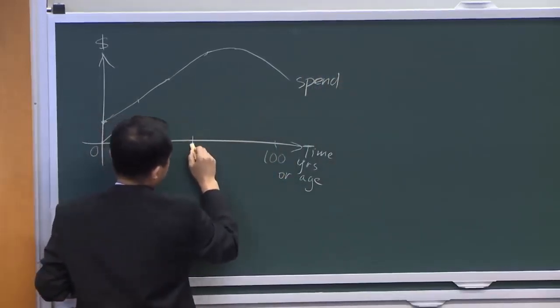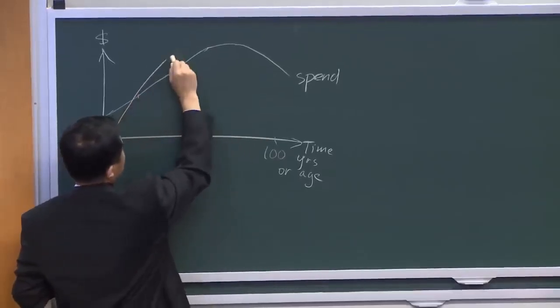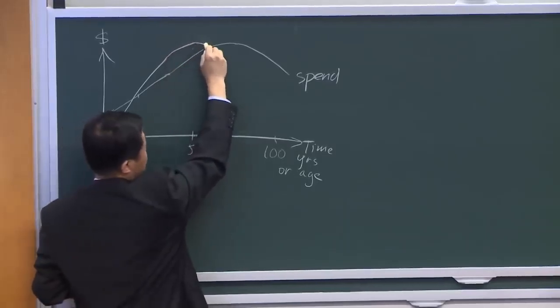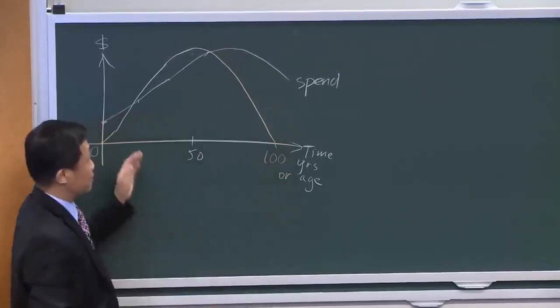Let's call this 50. Your earning probably, typically, peaks around the age of 50, but it really depends. Then you probably go down, back up. So that's your earning.